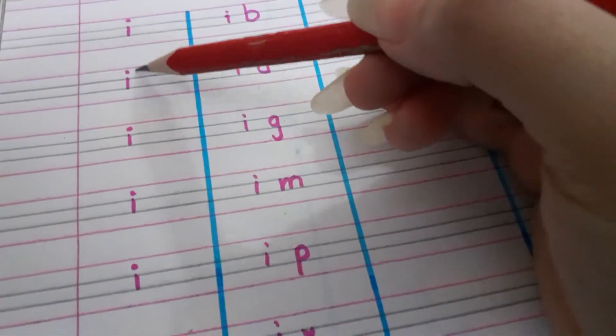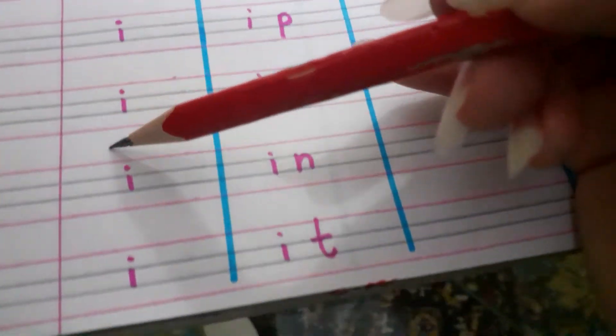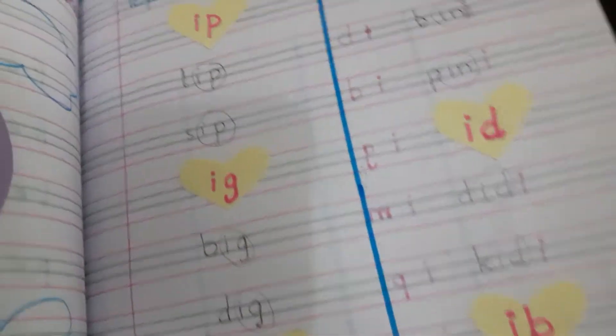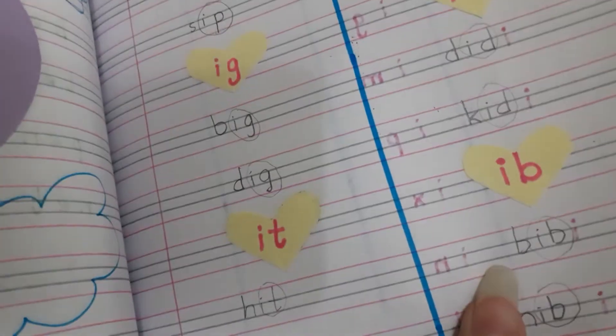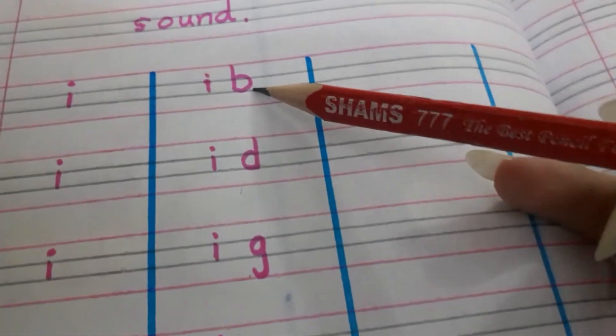First you will write here i in this line. After this, you will write here the two-letter words which we've done yesterday. These are the two-letter words. Let's revise them again.